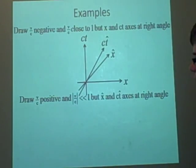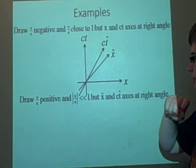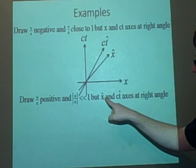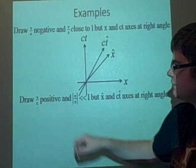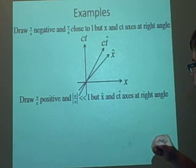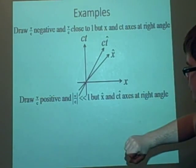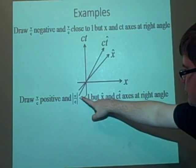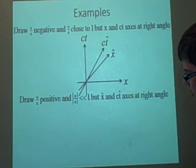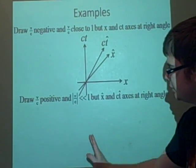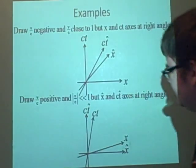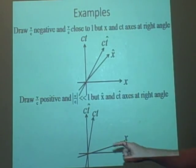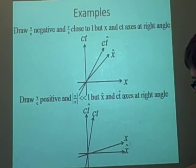For the last example, v/c is positive, so F-hat is outside again, and it's a lot less than 1 so the axes will be close. But this time we're given x-hat and ct-hat at right angles, so we draw those first. Because v/c is positive, F-hat must be outside the F axis, which means the F axes are going to be inside the F-hat frame. It's a lot less than 1, so x and ct will be inside and quite close to x-hat and ct-hat respectively.